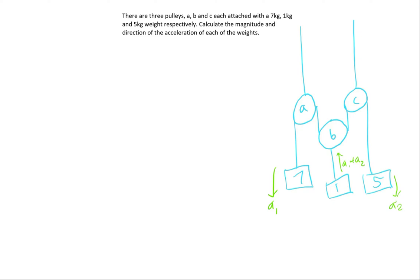The 1kg pulley accelerates at A1 plus A2 because the length of the string is a constant. For the length of the string to remain constant, the middle pulley must be moving at the acceleration of both the left and right pulley in order to ensure that the total length of the string is constant throughout.